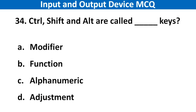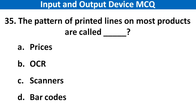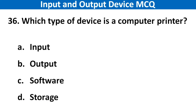Next question: Control, Shift and Alt are called which type of key? Right answer is option A: Modifier. Next question: The patterns of printed lines on most products are called. Right answer is option D: Barcodes. Next question: Which type of device is a computer printer? Right answer is option B: Output.